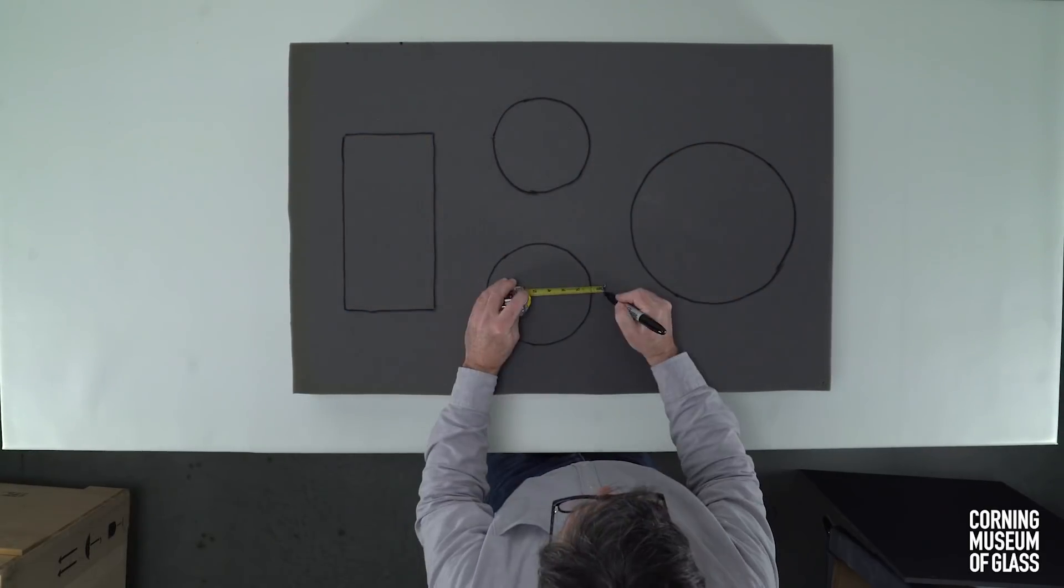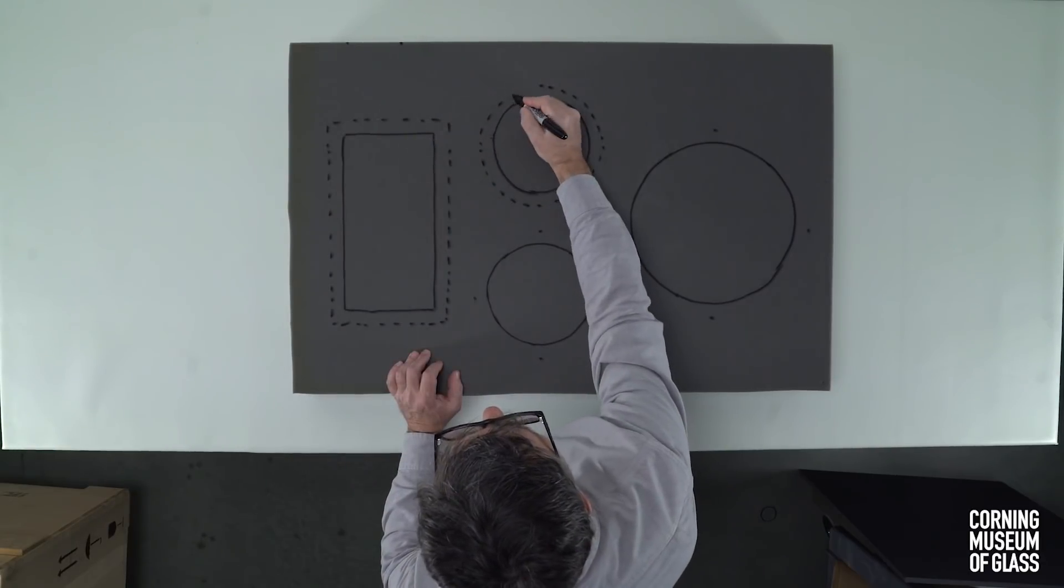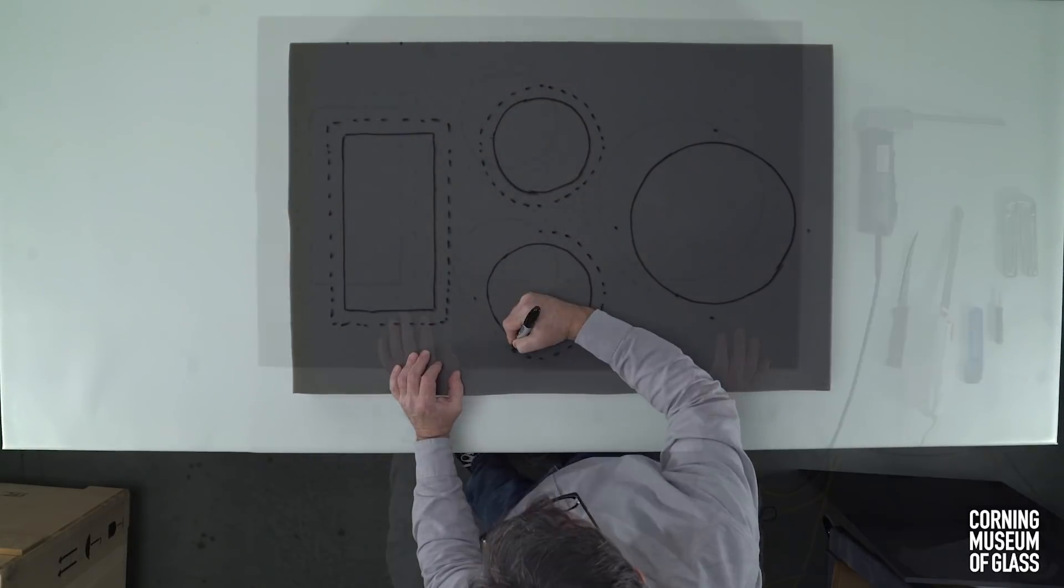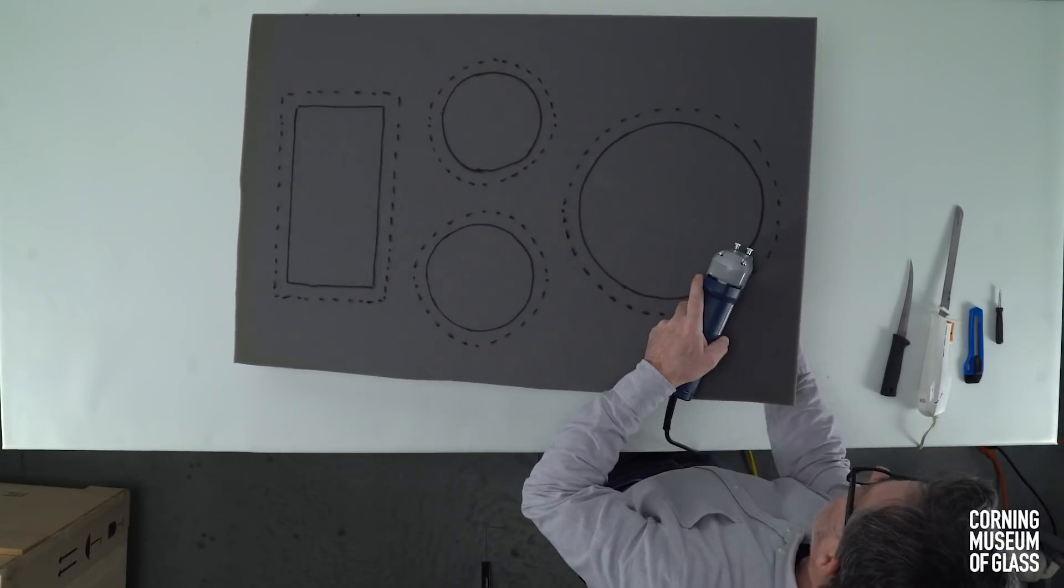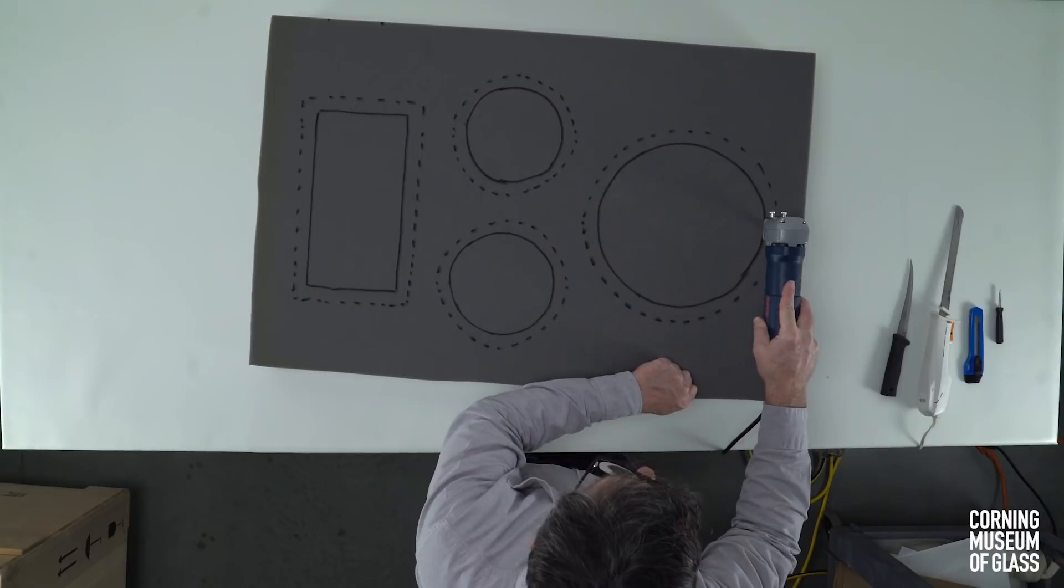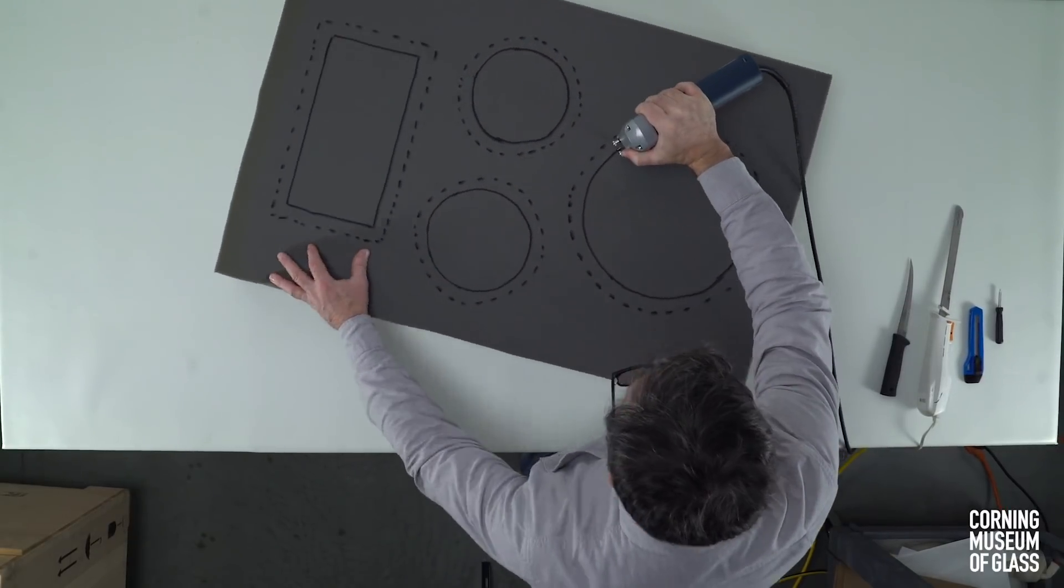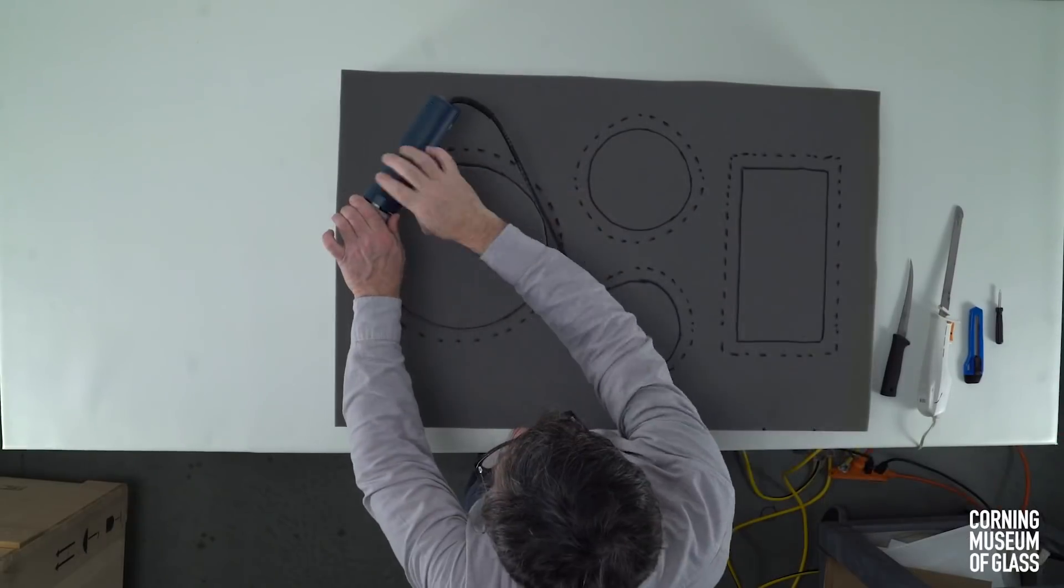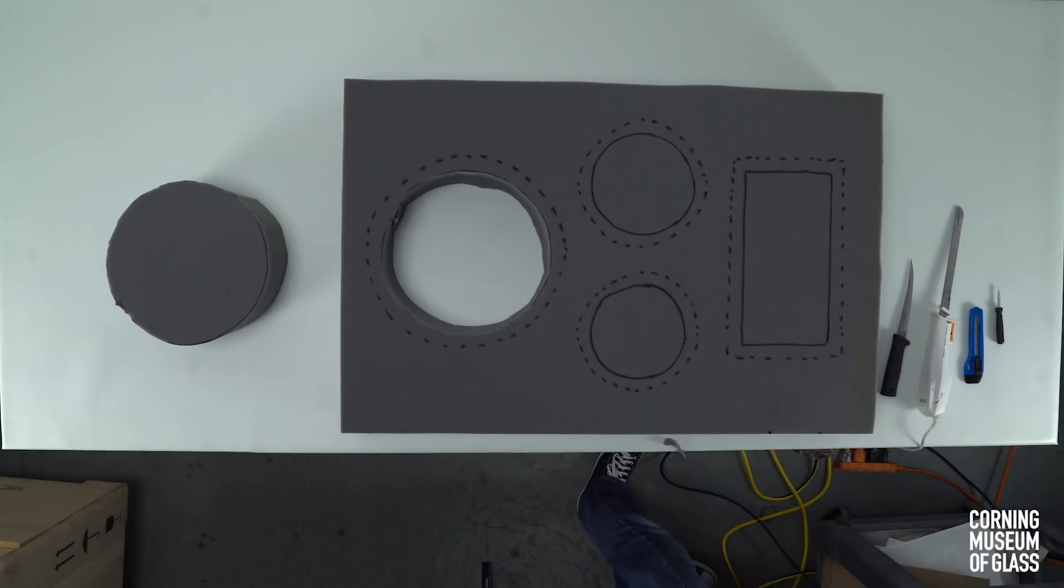Next, measure 1 inch outside each template line, and draw a dotted line around it. With a sharp knife of your choice, begin cutting out the foam shapes. Try to remove foam in one piece, as you will be using some of this material later.